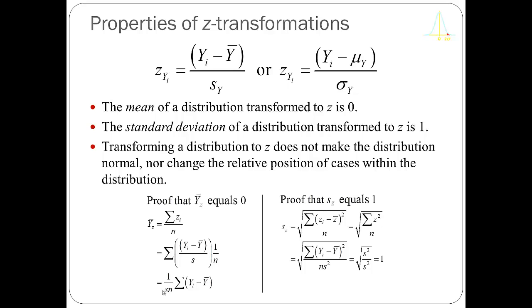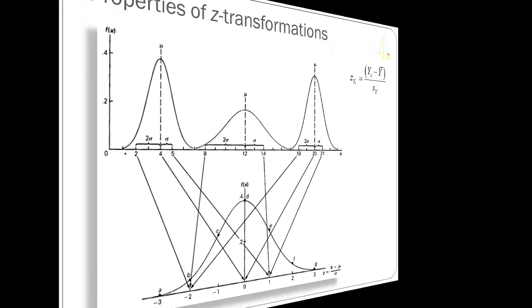These proofs show that anytime you take any variable and convert it to a z-score, it will have a mean of 0 and standard deviation of 1. Some people get confused and believe that transforming a variable to a z-score makes it normally distributed, and that's not correct. If your original distribution, say age, is skewed, then your z-score distribution of age will also be skewed.